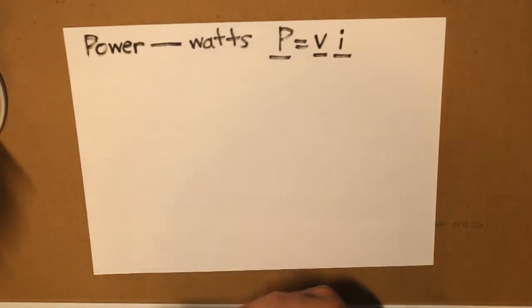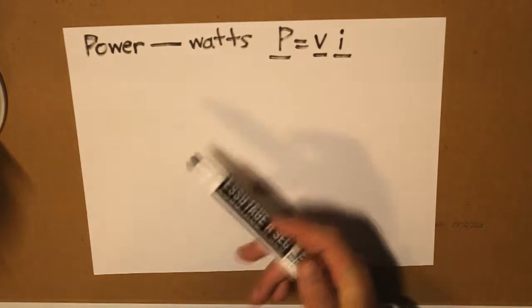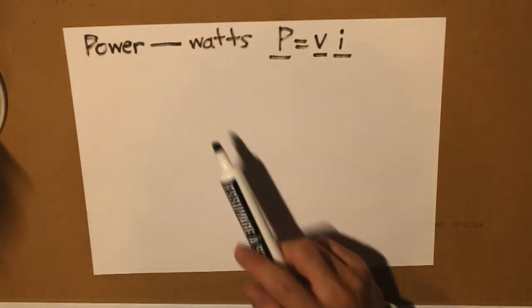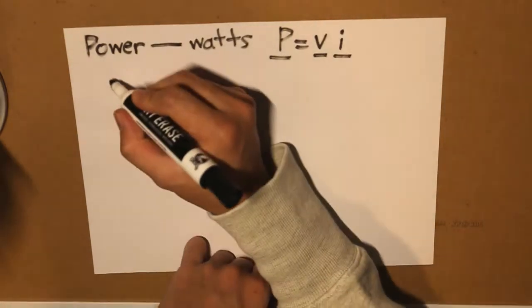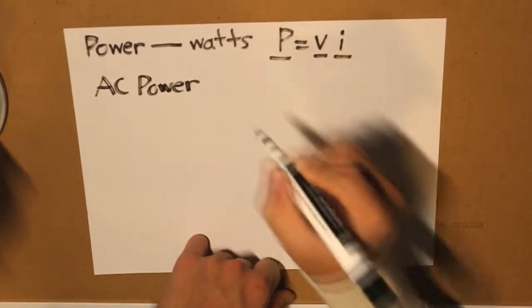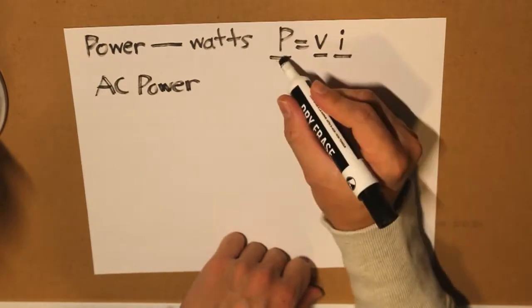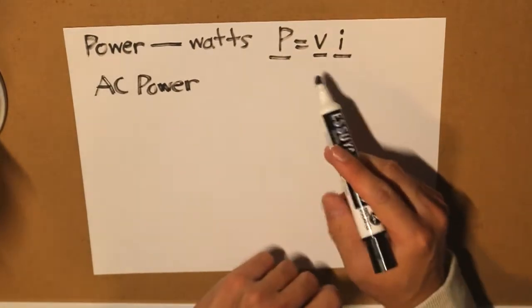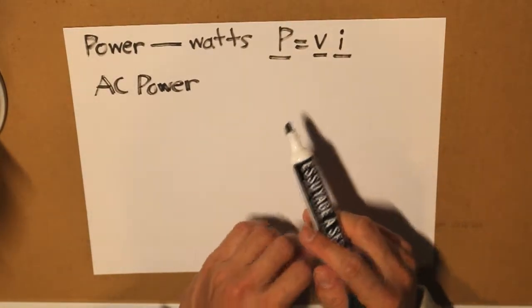Now that we know what AC is and what power is, let's combine these two terms together. So AC power, meaning that P is equal to VI in alternating current form.